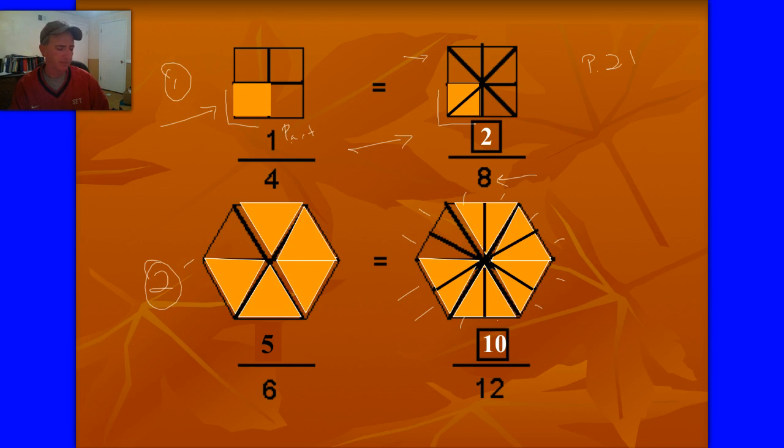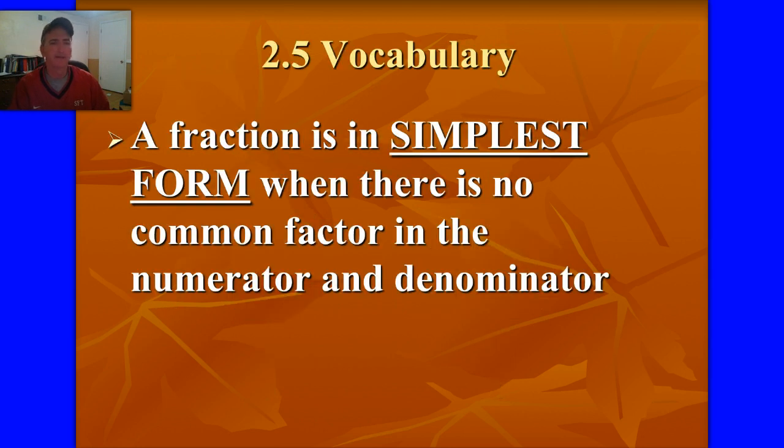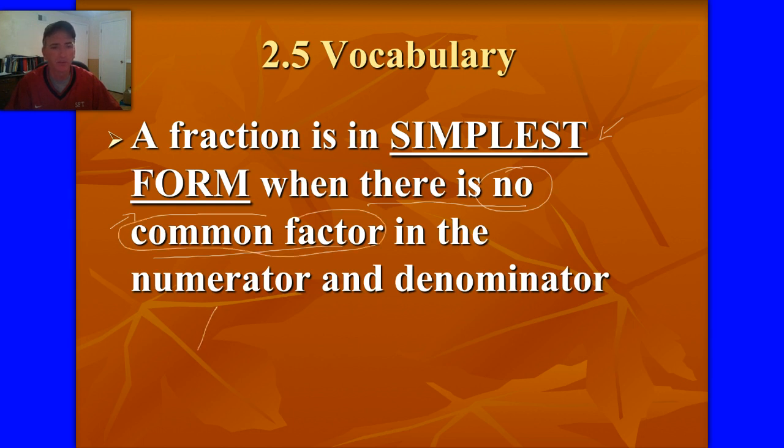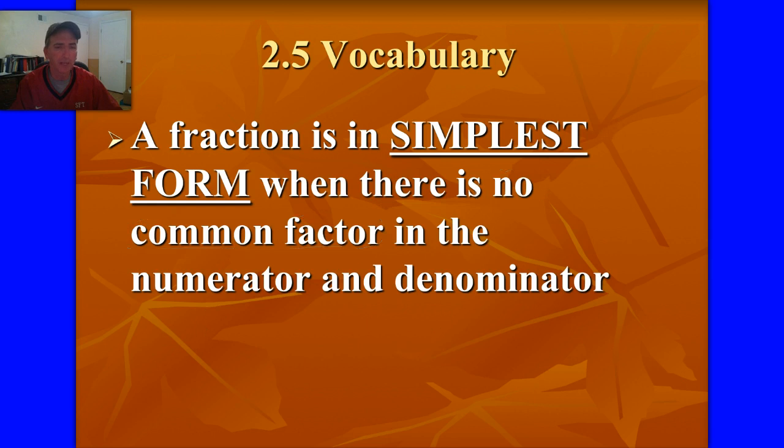If you have a whole bunch of equivalent fractions, the one with the smallest numbers is called simplest form. In math, here's what we say. There is no common factor in the numerator and the denominator. And those are really my key math words here. We'll learn how to do that later. But for now, what I need to be able to do is identify which one of these is in simplest form.